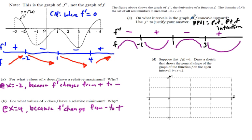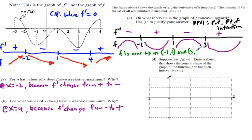So on what intervals is the graph of f concave upward? f is concave up on the intervals (negative 1, 1) and (3, 5). The justification using f'': f'' is positive on these intervals.